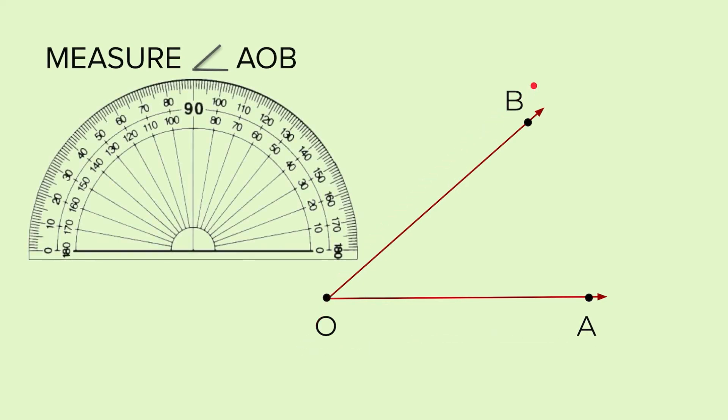To measure it, we will need a protractor. A protractor looks like this. We have to put this portion on the vertex. And the base arm of the angle is exactly on this line right up till the end.